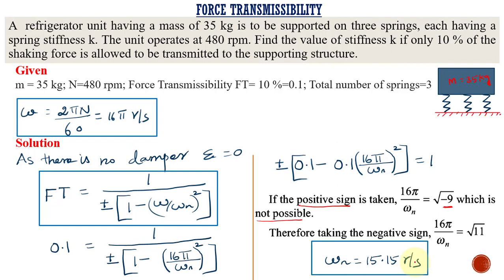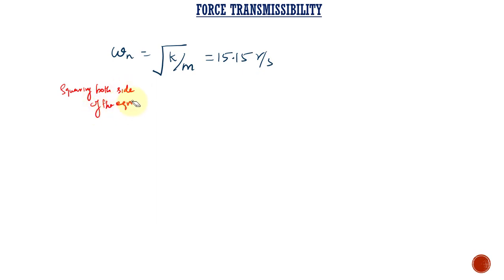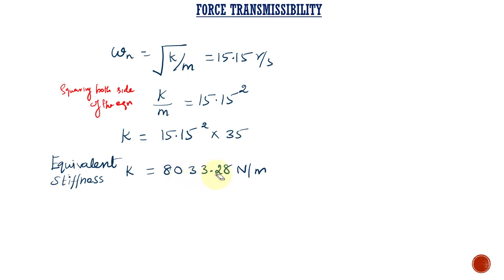We can now calculate the stiffness value. We know that the natural frequency ωₙ equals the square root of k/m. The mass is known and ωₙ has been calculated as 15.15 radian per second. Squaring both sides of the equation, k/m equals 15.15². Therefore k equals 15.15² multiplied by 35, since the mass of the refrigerated unit is 35 kg. The equivalent stiffness of the spring system is 8033.28 Newton per meter.